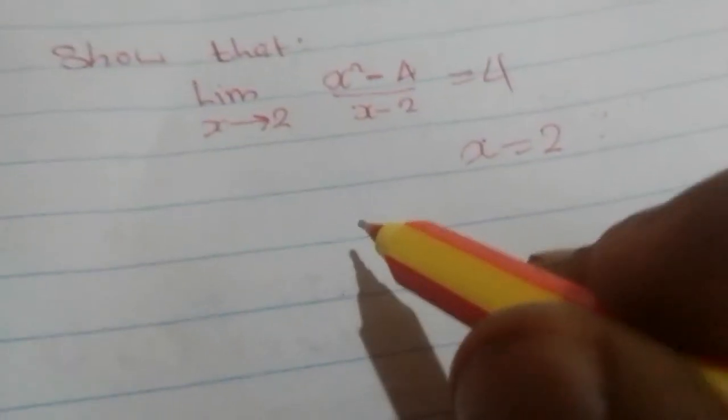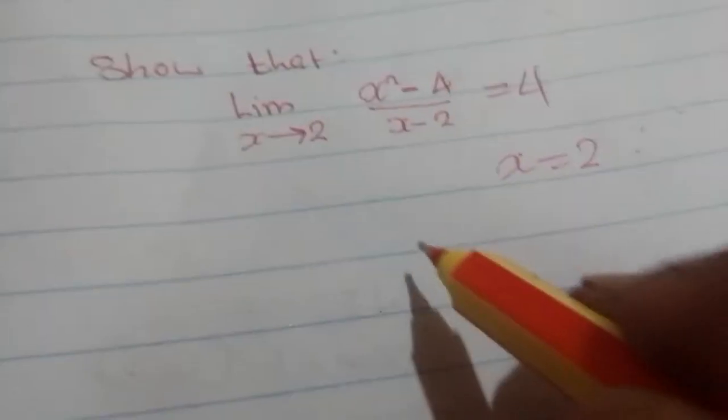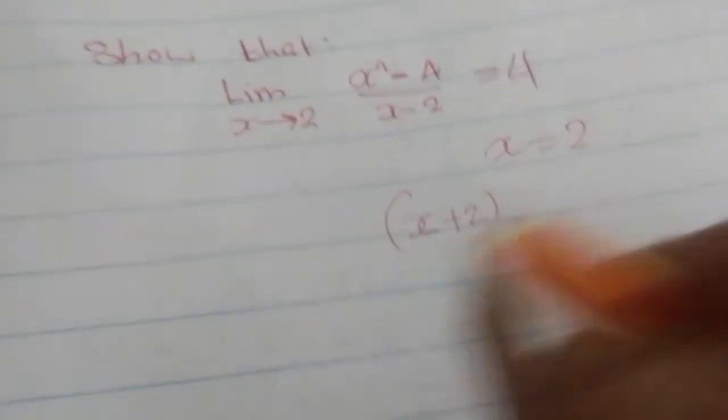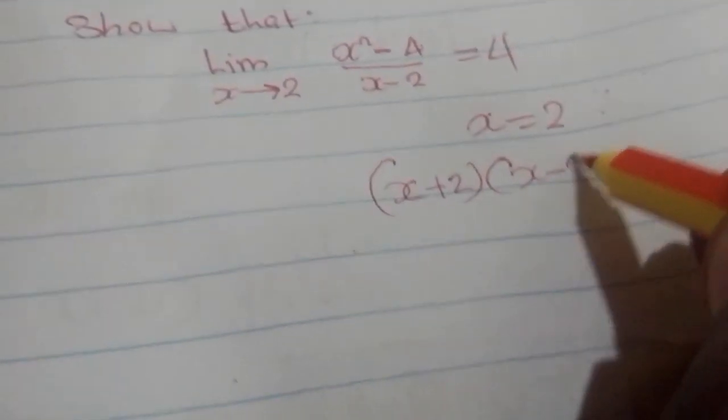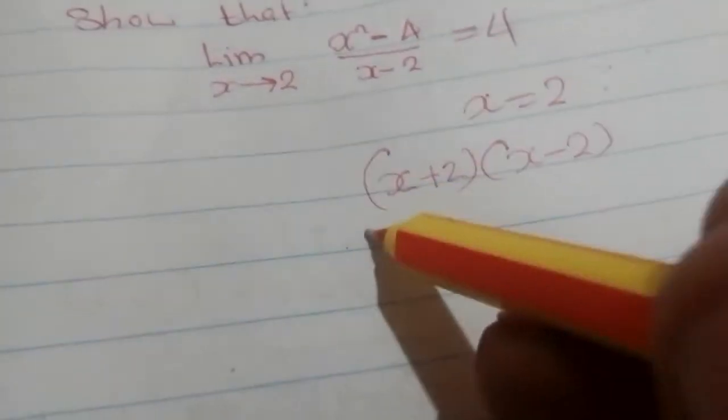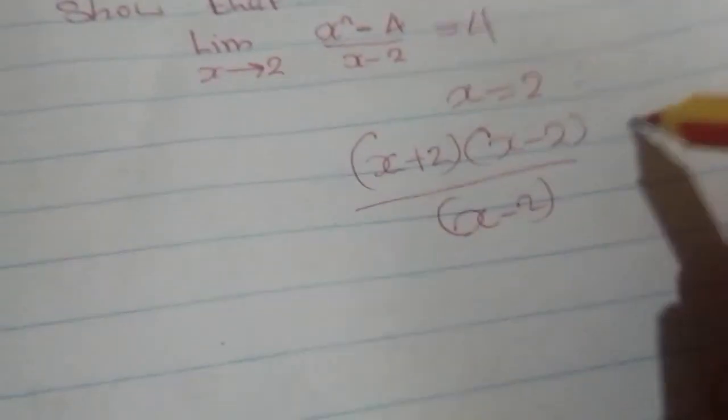You're going to see this one, we expand this one. So we are going to get (x+2)(x-2), which is the same as this one, over (x-2) is equal to 4.